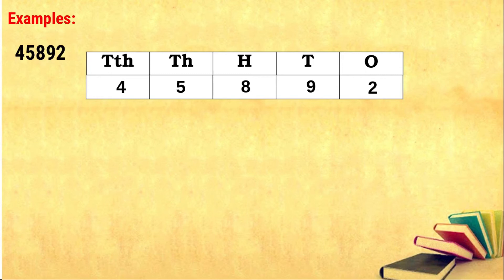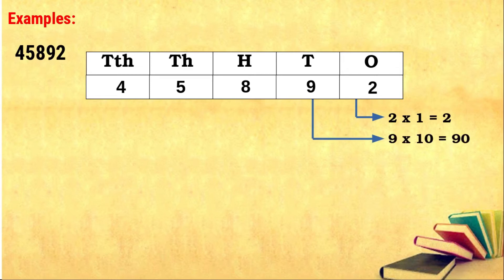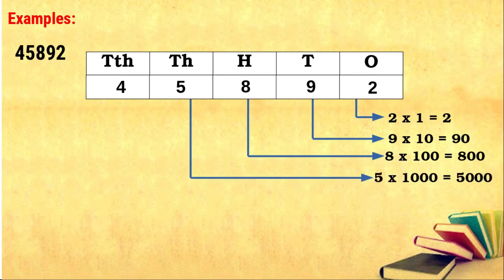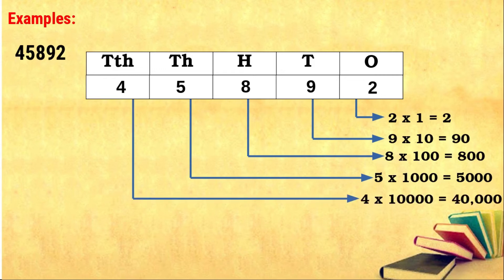Now we are going to find the place value for these digits. Two lies in the ones place, so the place value is two times one, that is two. Nine lies in the tens place, so the place value is nine times ten, that is ninety. Eight lies in the hundreds place, so the place value is eight times one hundred, that is eight hundred. Five is in the thousands place, so five times one thousand equals five thousand. Four lies in the ten thousands place, so the place value of four is four times ten thousand, that is forty thousand.